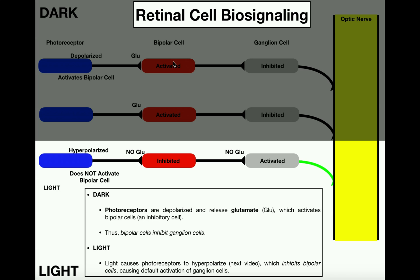Bipolar cells are inhibitory cells by nature. The basic idea is that if a bipolar cell is activated, it will inhibit the ganglion cell. Since the ganglion cell's axons become part of the optic nerve, if the ganglion cell is inhibited, then the optic nerve perceives no light. So in the dark: photoreceptors depolarize and activate the bipolar cell, the activated bipolar cell inhibits the ganglion cell, and therefore no light is perceived.